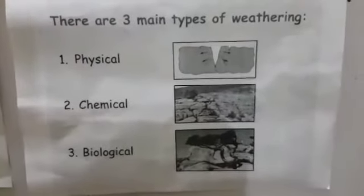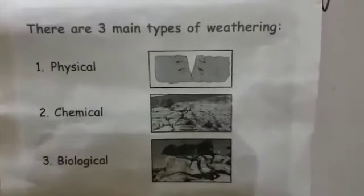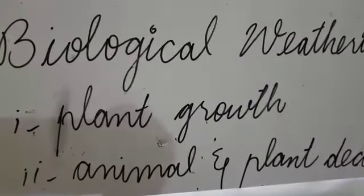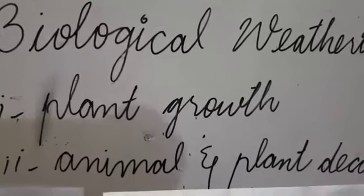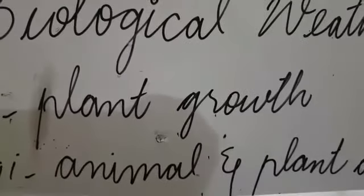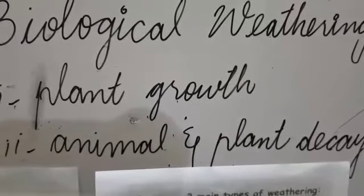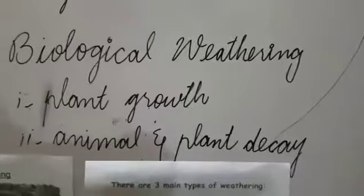The last type is biological weathering. Biological weathering involves the role of living organisms such as plants and animals. This weathering happens because of plants and animals, and has two types: plant growth and animal and plant decay. In plant growth, when the roots of plants exert pressure and get inside the rocks, this causes the breaking down of those rocks. In animal and plant decay, when animals and plants die, their bodies rot or decay over time, and that decay causes the breakdown of rocks into smaller parts.